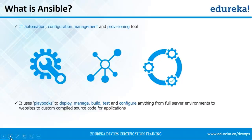IT automation means automating your entire IT infrastructure. Ansible is a radically simple IT automation engine that automates your cloud provisioning, configuration management, application deployment, intra-service orchestration, and many other IT needs. Ansible will help manage your application from the building process, through testing, and while it's getting deployed in the production server. All you have to do is write a simple playbook — just a few lines of code — run it, sit back, and watch the output. It's very easy and very powerful.